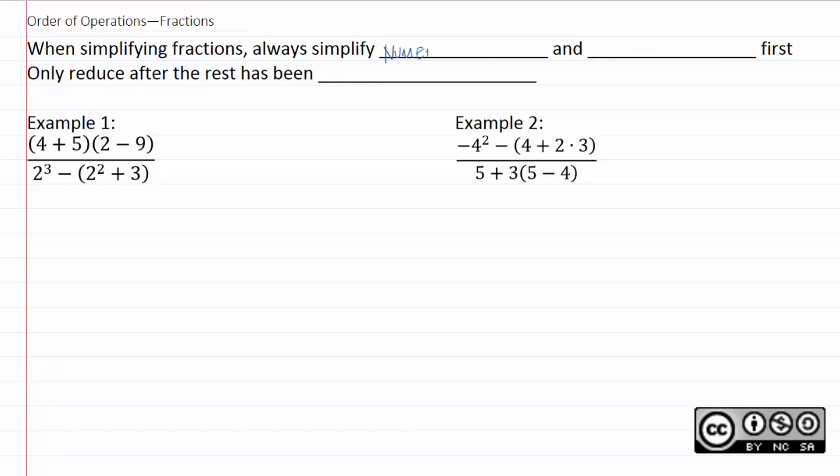Of course, our mathematical names for the top and the bottom of a fraction are the numerator and the denominator. What we'll actually do as we do these problems is separate the numerator and denominator, simplify both separately, and then we'll reduce the resulting fraction after the rest has been simplified.